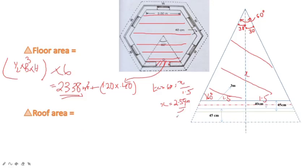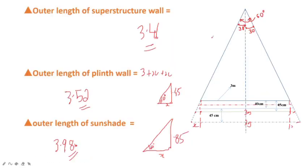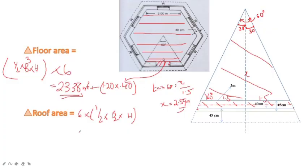We have to add the area of the outside triangle. That portion is E. Using the formula half into base into height, the area of the outside triangle takes the outer length of the superstructure wall as the base, that is 3.46 m. So it is 6 into 1.5 into 3.46 into the height.